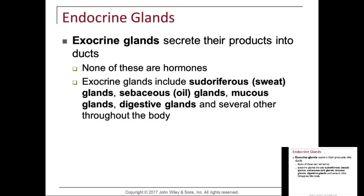Endocrine glands secrete their products into ducts in the exocrine system — exocrine is not really going into the bloodstream. Exocrine is designed to release to the epithelial surface, including sweat glands, oil glands, and digestive glands. Digestive glands aren't delivering to the outside of the body, but to the epithelial surface in the lumen. The entire digestive system is epithelium, as is the skin.